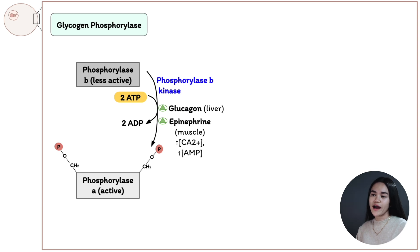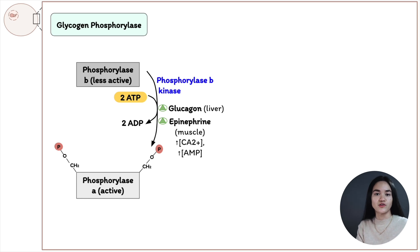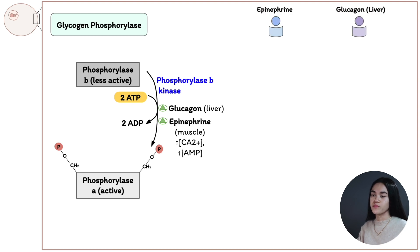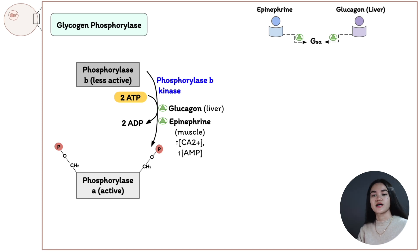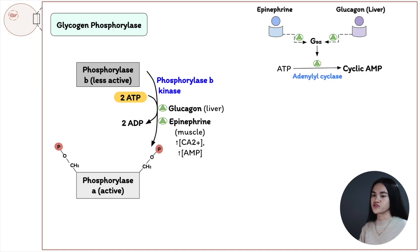Another hormone called glucagon also activates this process. Glucagon is secreted when glucose availability is low, triggering glycogen mobilization — the breakdown of glycogen. A mnemonic: glucagon = glucose is gone. When epinephrine or glucagon binds to specific surface receptors, it activates a GTP-binding protein. Note that glucagon acts only on hepatocytes, as muscle cells lack glucagon receptors. This leads to ATP being converted to cyclic AMP, an intracellular second messenger.